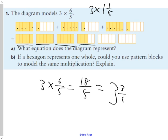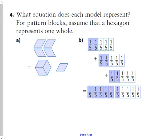Question four — we skipped two and three. This asks: what equation does each of these models represent? For pattern blocks, assume a hexagon represents one whole. This shape here is a hexagon and that represents one, so each of the three shapes that make up the whole is going to represent one-third.